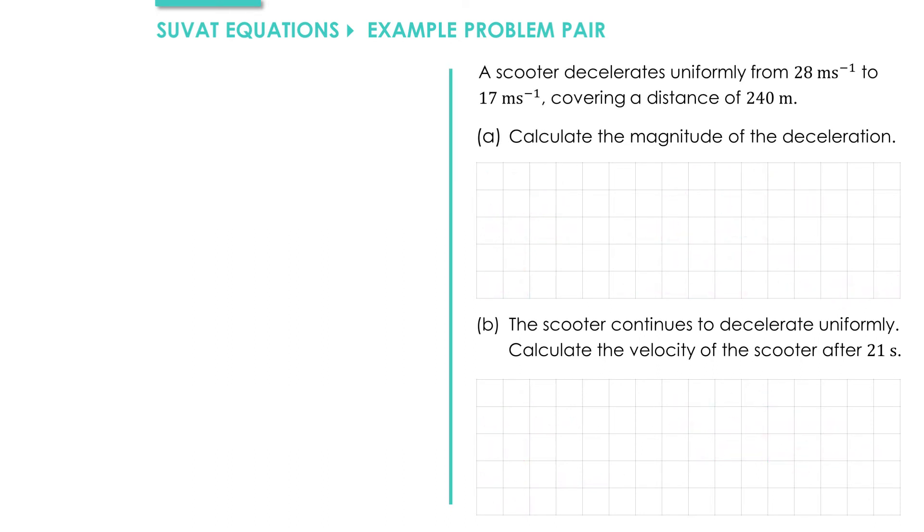We have a scooter which decelerates uniformly from 28 meters per second to 17 meters per second, covering a distance of 240 meters. In part A, we need to calculate the magnitude of the deceleration. Let's start by writing down our values for SUVAT. We have an initial velocity of 28 meters per second and a final velocity of 17 meters per second. It covers a distance of 240 meters. Since it doesn't change direction, we have a displacement of 240 meters. We're trying to find the deceleration A, and we're not interested in T.